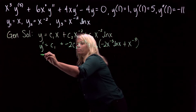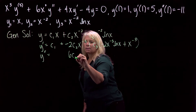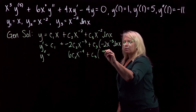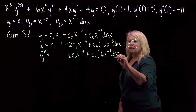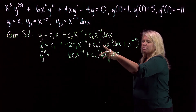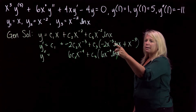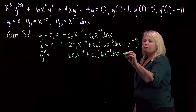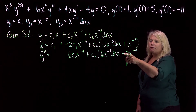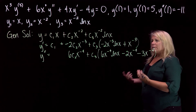For y double prime: c1 drops out. We get 6 c2 x to the negative 4. Then using the product rule: 6 x to the negative 4 ln of x. For the next product rule term: negative 2 x to the negative 3 times 1 over x gives negative 2 x to the negative 4. Taking the derivative of the remaining term gives another x to the negative 4 term, so combining: minus 3 x to the negative 4 times c3.